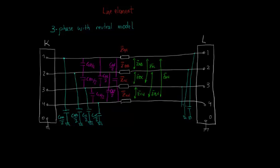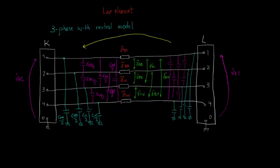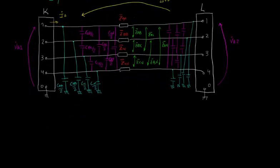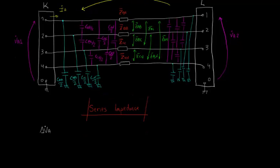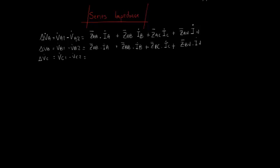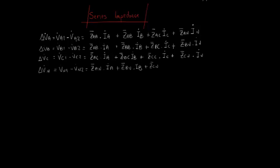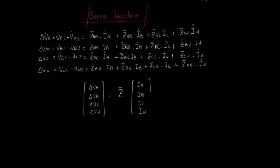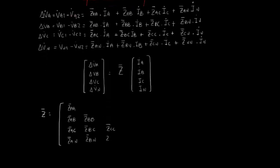Mathematically, the software deals with this model considering two distinct matrices: one for the series impedances and one for the shunt admittances. In order to define the series impedance matrix, let's label the nodes of each bus connected to phase A as VA1 and VA2, the current in the series branch as IA, and the voltage drop in phase A as delta VA. We can say that delta VA equals VA1 minus VA2, which equals ZAA times IA plus ZAB times IB plus ZAC times IC plus ZAN times IN. Similar expressions can be found for the other three conductors. We can group these equations and write them in matrix form as the delta VA column vector equals matrix Z times the current column vector, where Z is a 4x4 symmetrical matrix.